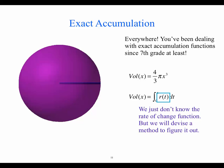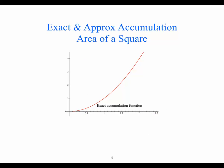So where do exact accumulation functions come from? Any amount function — the functions you've been dealing with your whole math career. Now we just have a different perspective on those as accumulation functions, where the accumulation is occurring at some rate of change that we don't know, and our goal now is to figure that out. So here is an exact accumulation function for the area of the square as a function of its side length. Our next step is to build an approximate accumulation function.